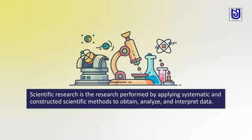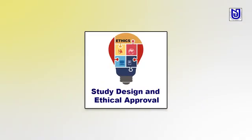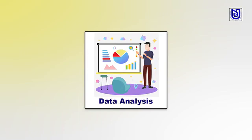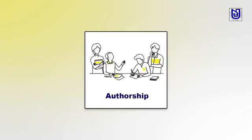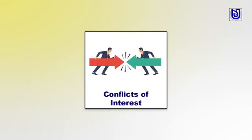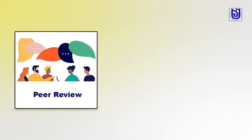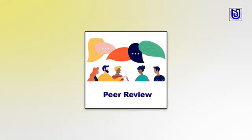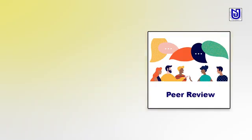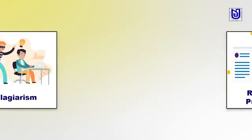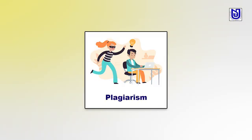The best practices — what are the best practices, why guidelines, and what kind of guidelines are developed — include the study design of ethical approval, data analysis, authorship, conflict of interest, peer review, redundant publication, plagiarism, and duties of authors. All these things we have to consider in any definition of interest for authors.